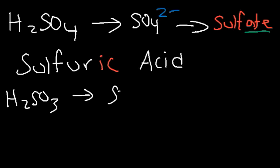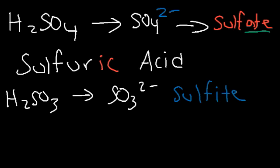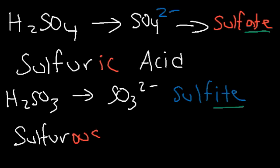H₂SO₃ contains the polyatomic ion sulfite, and sulfite has the ending '-ite', which we need to replace with '-ous'. So let's start with the element sulfur and add the suffix '-ous'. It's going to be sulfurous acid.